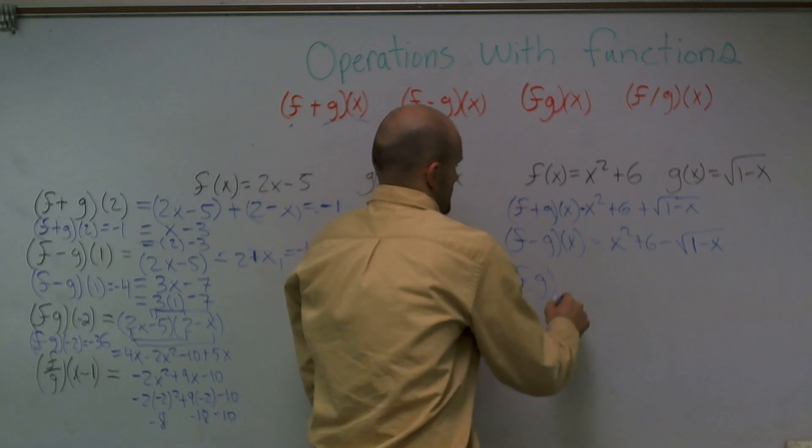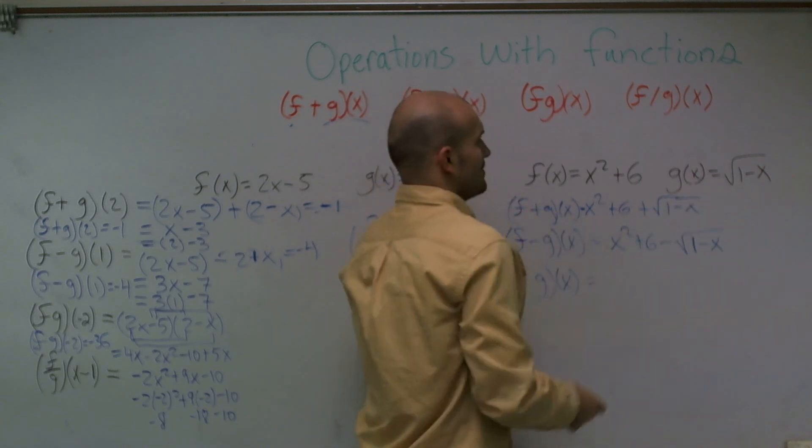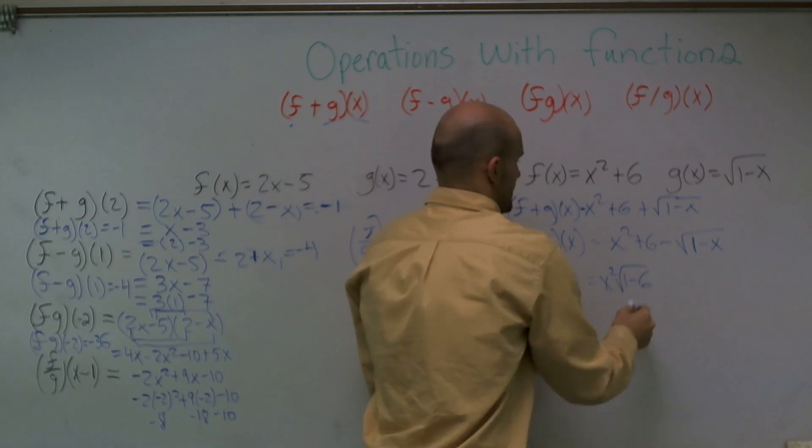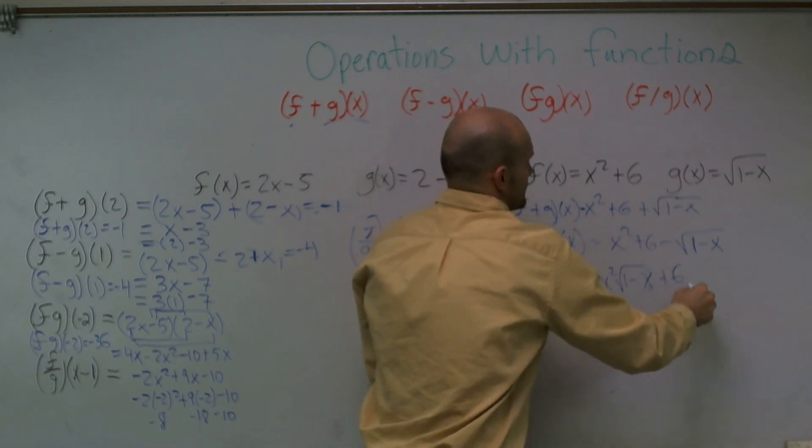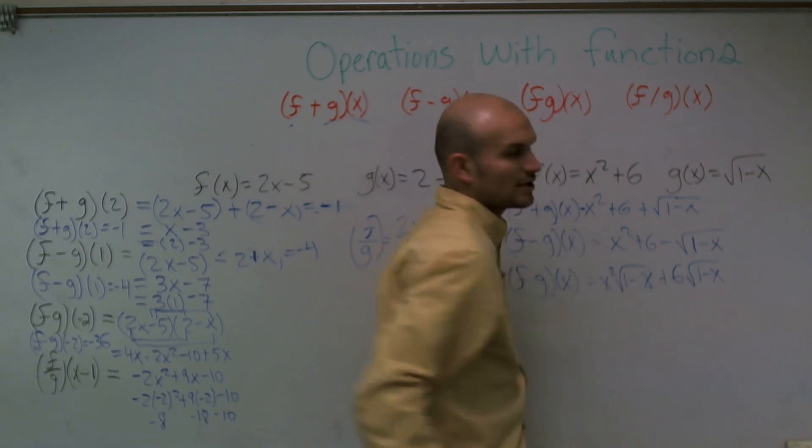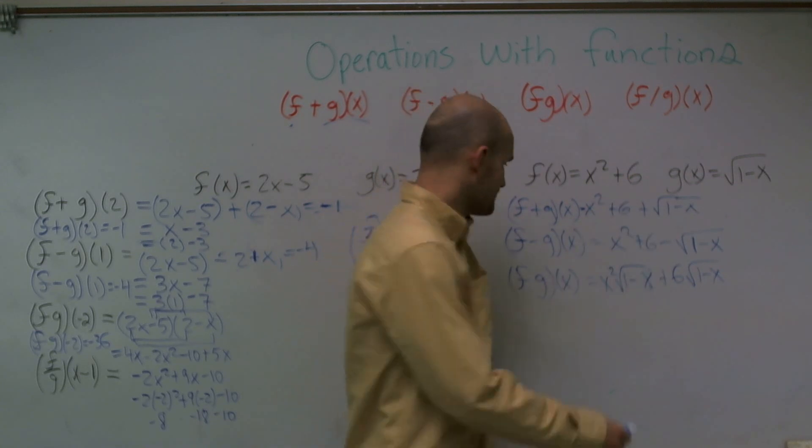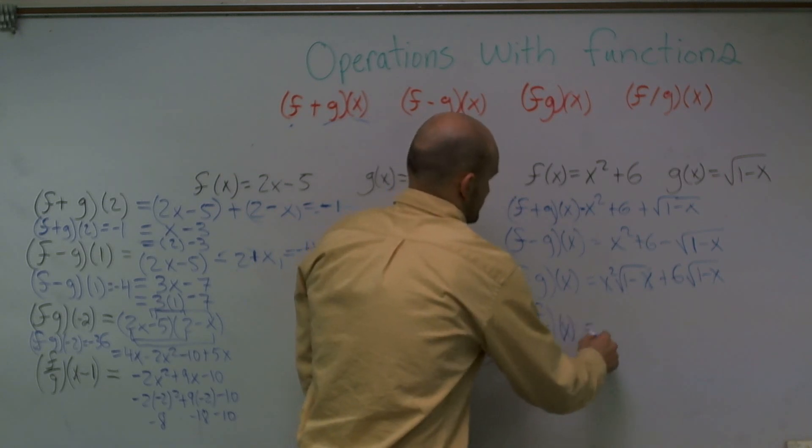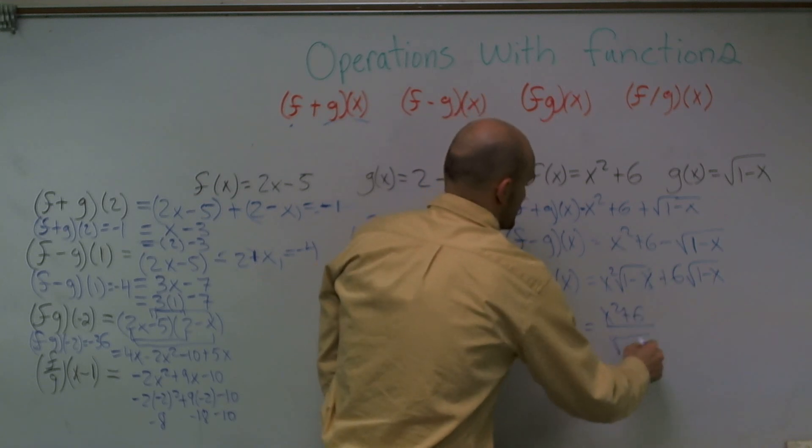So f minus g of x is going to equal x squared plus 6 minus square root of 1 minus x. My fg of x, again, I'm going to have now the distributive property. So the square root of 1 minus x times x squared. I don't know. Yep. 1 minus x. And then square root of 1 minus x times 6. What I'm doing is the distributive property. Just trying to make it go a little bit quicker for you guys, but just make sure I have this term times these two terms. I have to multiply by both of them.